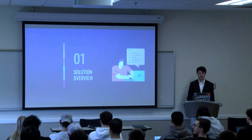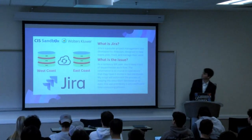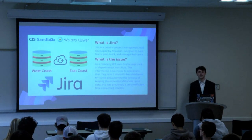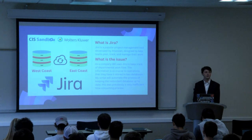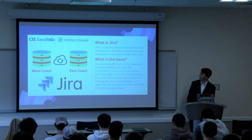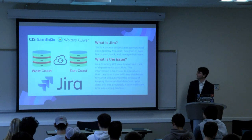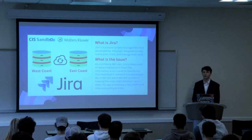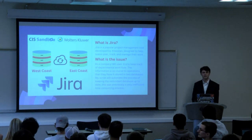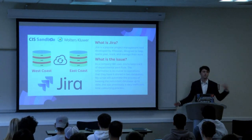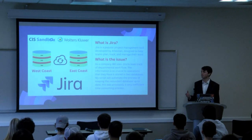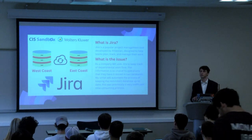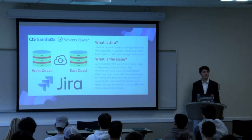Starting with a quick overview. What I'm dealing with is JIRA — for those not familiar, it's a workflow management software that a lot of companies use. It's an Atlassian product. Wolters Kluwer uses JIRA and they house all the data in-house on two server locations, one on the east coast and one on the west coast. At any given moment they are using the east coast, but if something goes wrong they want to be able to switch over to the west coast. My project was to automate that process.